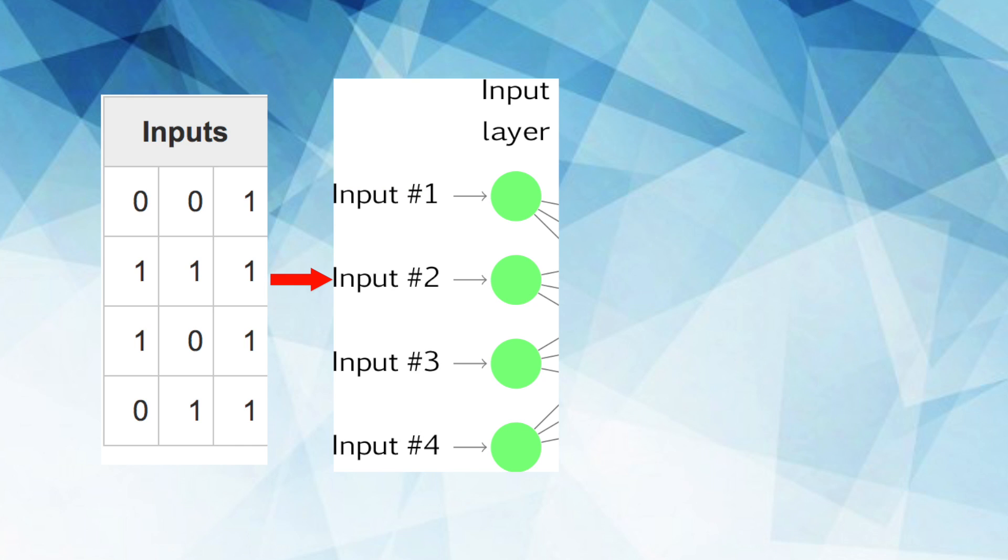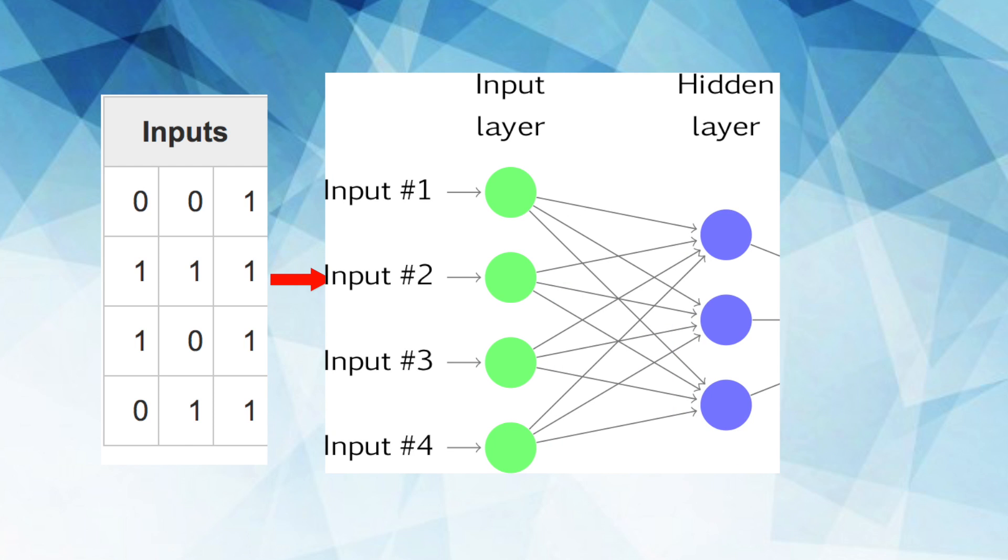So our three layer neural network will first have an input layer. Each neuron represents a different row from our input data. Then it has a hidden layer. Data will flow in one direction from our input layer to our output and the way it does this is by having weights that connect each neuron in one layer to every neuron in the next layer.